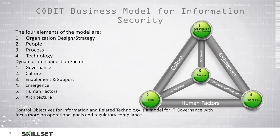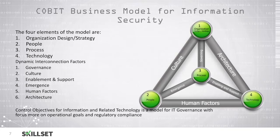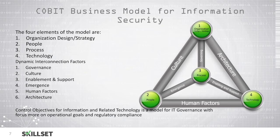The COBIT model is a business model for information security. There are four main elements of this model: the organizational design and strategy, your people, your processes, and your technology. This model provides dynamic interconnection factors between the elements such as governance, emergence, and architecture. The control objectives here are for information technology, and they provide a focus on governance, operational goals, and regulatory compliance. You should be familiar with the COBIT model for the CISSP examination, remembering that it has four main elements and dynamic interconnection factors.